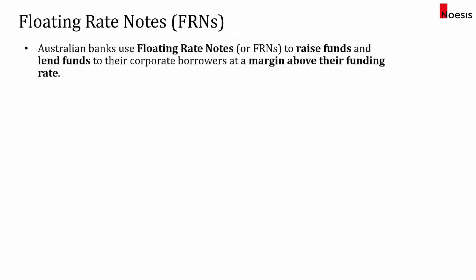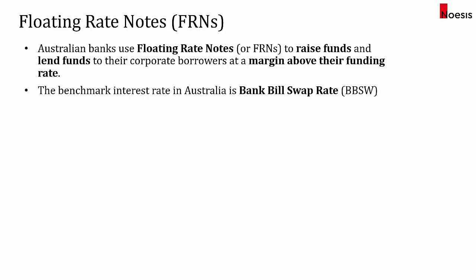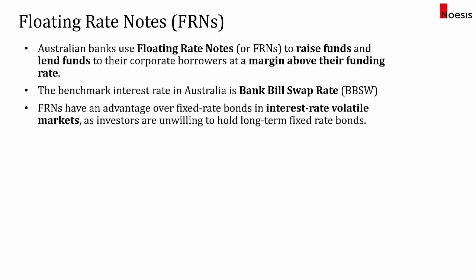In Australia, banks use FRNs to raise funds and also lend funds to corporate borrowers at a margin above their funding rate — the BBSW. FRNs tend to have an advantage over fixed rate bonds when interest rates are volatile, as investors are normally not willing to hold long-term fixed rate bonds in volatile rate environments. For fixed rate bonds, especially longer-term ones, market value will be very sensitive when interest rates are volatile, which could lead to very high profits or very high losses.